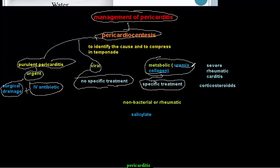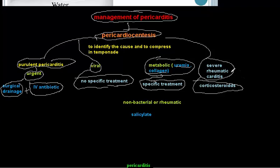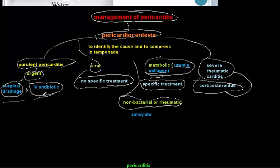For severe rheumatic carditis or immune disorders such as rheumatoid arthritis, treatment is with corticosteroids. If the pericarditis is neither bacterial nor rheumatic — so surgical drainage, IV antibiotics, and corticosteroids are not indicated — the treatment of choice is salicylates.